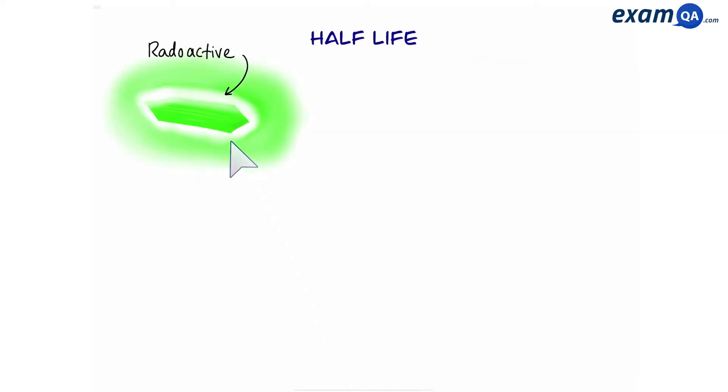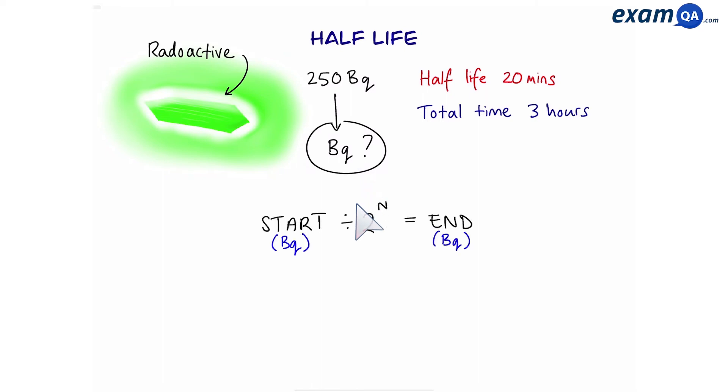So here we have some radioactive material. Let's say that we measure the radiation and it says 250 becquerels. The half-life was given to us as 20 minutes. If we leave it for three hours and come back after three hours, what will the new becquerels be? To answer a question like this, we're going to use this equation. Becquerels at the start divided by 2 to the power of n, which means number of half-lives, equals becquerels at the end. And to find n, all we have to do is total time divided by time for one half-life.